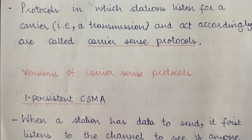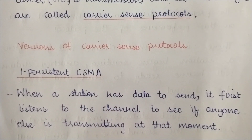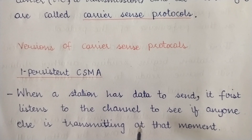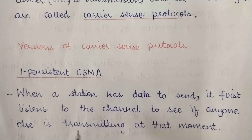The first version is 1-Persistent CSMA. When a station has data to send, it first listens to the channel to see if anyone else is transmitting at that moment. A station wanting to send data must first know whether the transmission channel is free, because you cannot transmit data through a channel which is already carrying some data. So the first thing the station does is listen to or sense the channel.